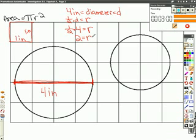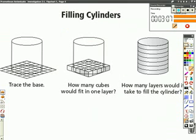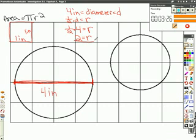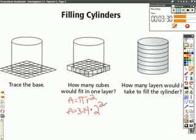Once I have my radius, now I can find my area. I'm going back to my diagram. How many cubes would fit in one layer? Well, now we know that's basically asking us what is the area of the bottom of the cylinder. So area equals pi r squared. Area equals 3.14 times, we just said the radius was two, correct? Two.